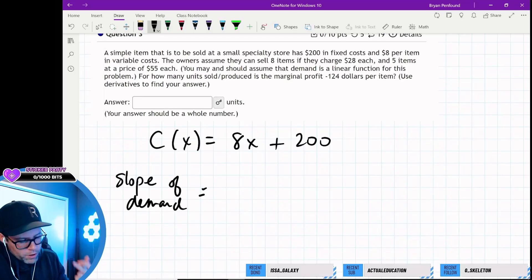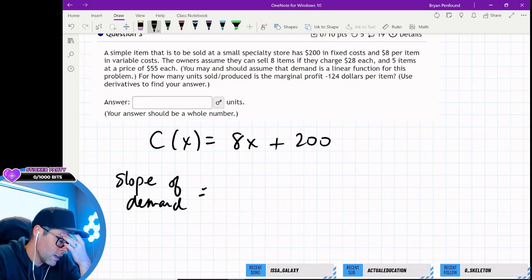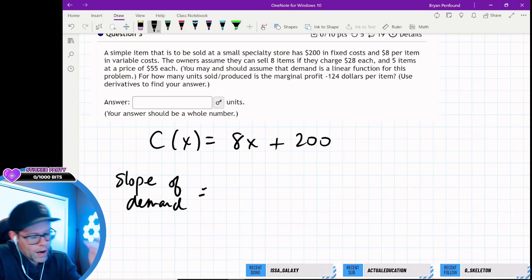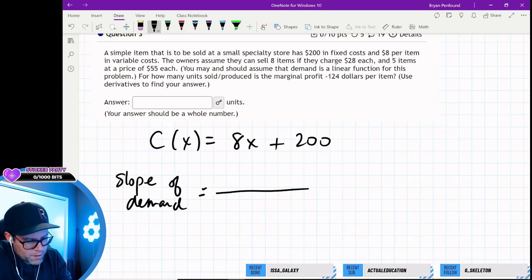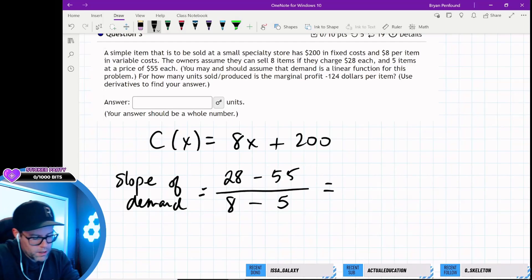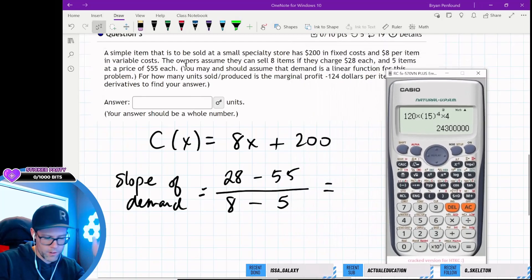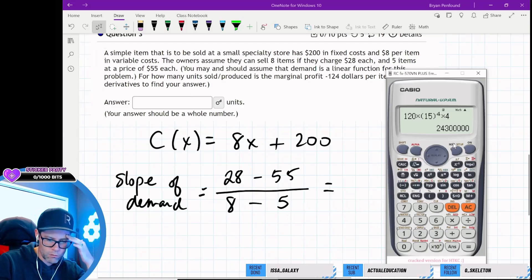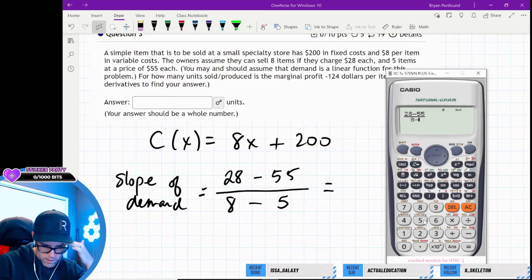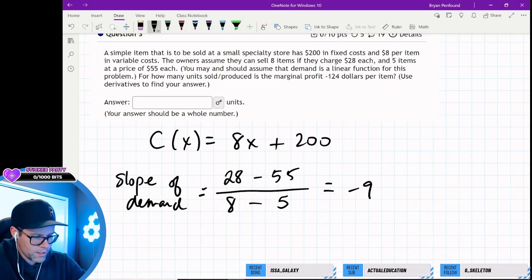This should be our outputs versus our inputs. So the inputs have to be the number of items, right? And the outputs are going to be the dollars. So they can sell eight items if they charge $28 and five items at a price of $55. So this should be our slope. And again, we're going to assume that demand is linear here so that we're going to get a quadratic kind of revenue function. So 28 minus 55. Yeah, this should be a negative slope. So that makes sense to me. Oh, that's negative nine. That's really sweet. Okay, so the slope of the demand function is negative nine.